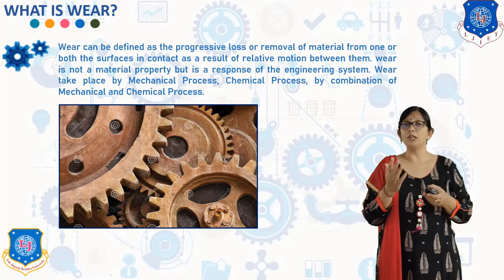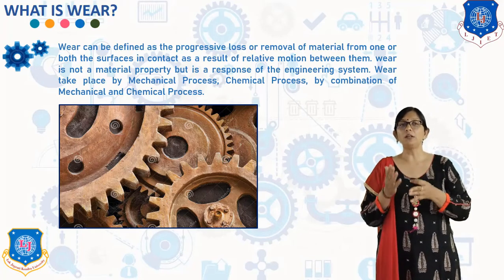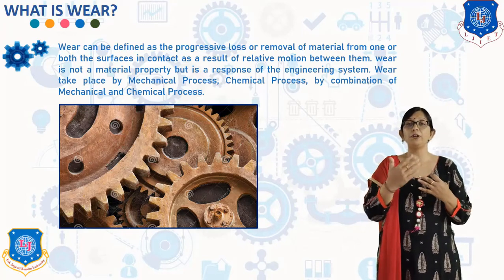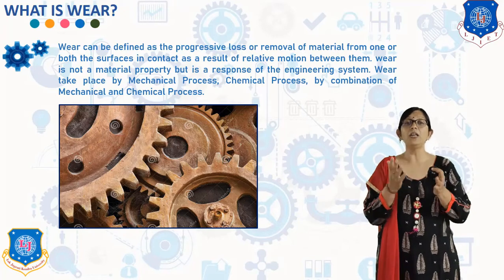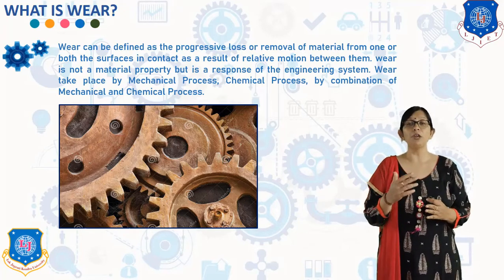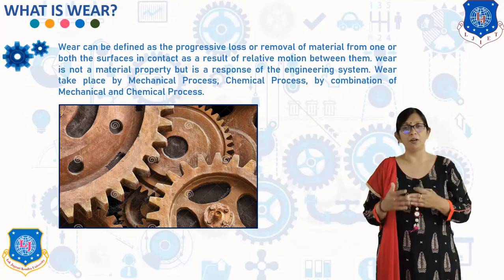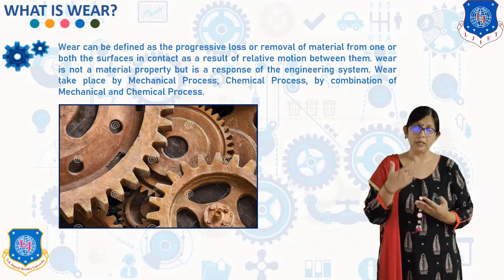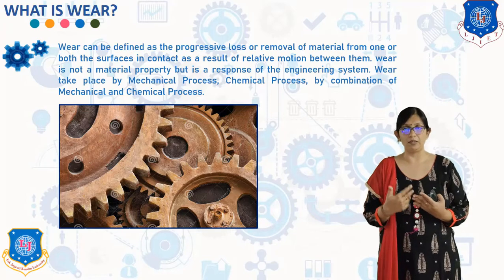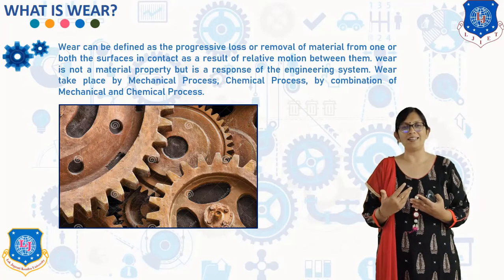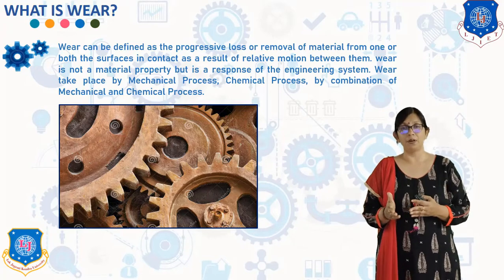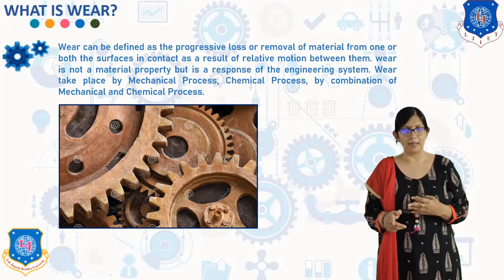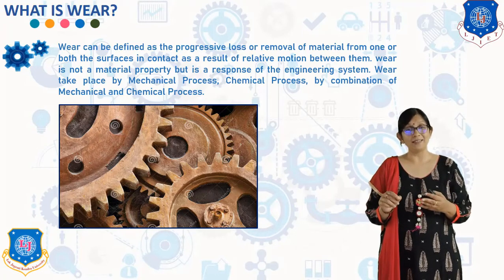Wear is the single most influencing factor which shortens the effective life of a machine or its components. For example, the difference between the weight of a new truck and one that is completely worn out is just a matter of a few kilograms. Examples where wear is undesirable include bearings, gears, cams, pistons and cylinders, brakes, clutch, tires, and oil seals. Examples where wear is desirable include machining, grinding, polishing, and writing with a pencil.